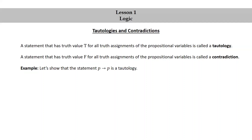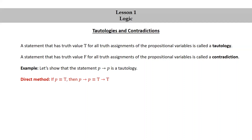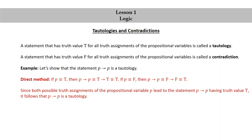Let's look at an example. We'll show that the statement p implies p is a tautology, using the direct method. If p is true, then p implies p is logically equivalent to true implies true, which is true. If p is false, then p implies p is logically equivalent to false implies false, which is also true. Since both possible truth assignments of the propositional variable p lead to the statement p implies p having truth value true, it follows that p implies p is a tautology.